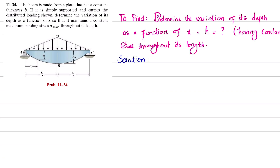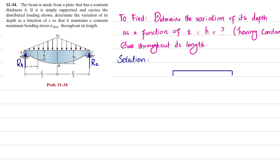Let's start with the solution. First, if you remove the pin support at point A, you will have a reaction force Ra. If you remove the roller support at point C, you will have a reaction force Rc. Drawing the free body diagram of this beam: at point A we have Ra, at point C we have Rc. The distance from mid-point to each end is L/2, so the total length is L.